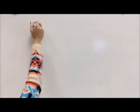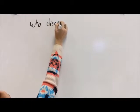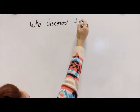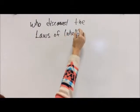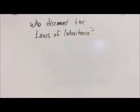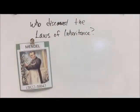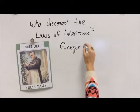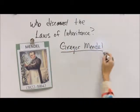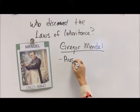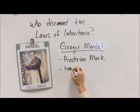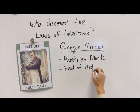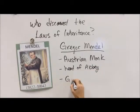Now we're finally going to get to who actually discovered these ideas, these laws of inheritance. He's a pretty famous dude who didn't try out to be famous. The name was Gregor Mendel. By his clothes in the picture, you can tell he was an Austrian monk — somebody who dedicated his life to the church. He turned out to be the head of the abbey because he was a pretty cool guy.